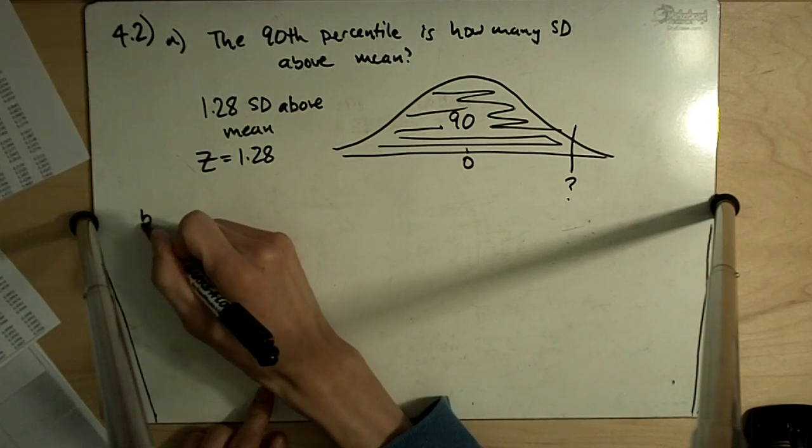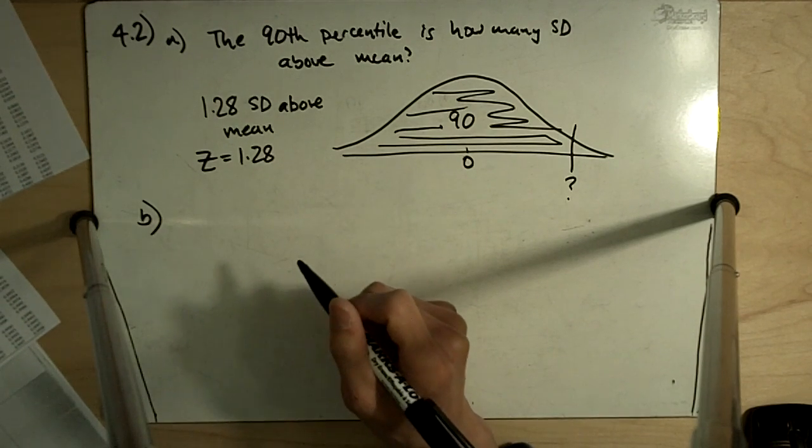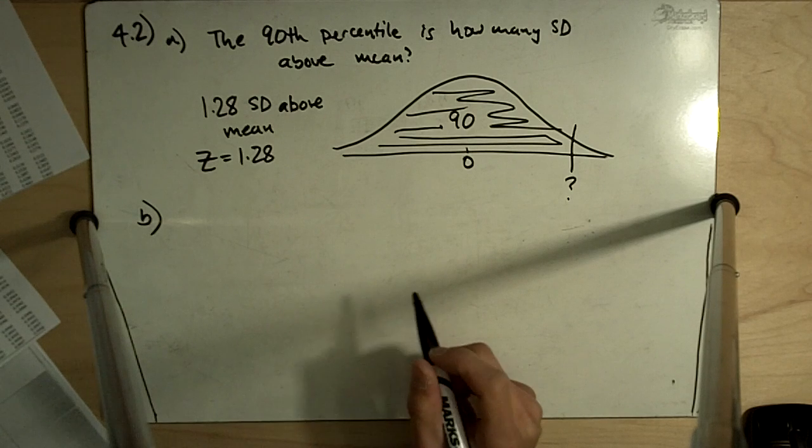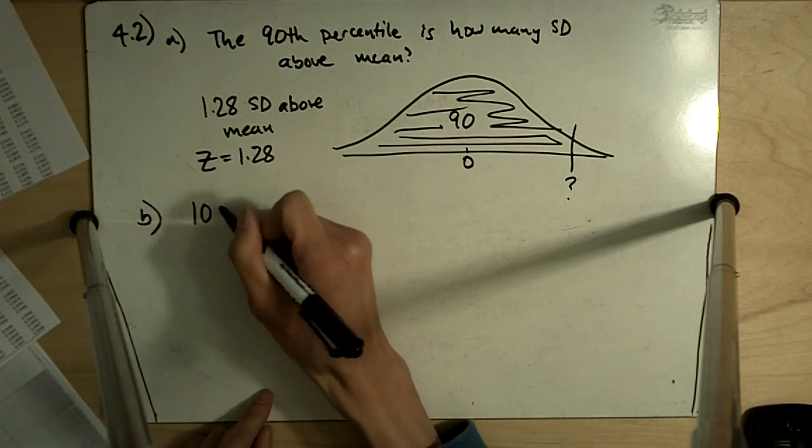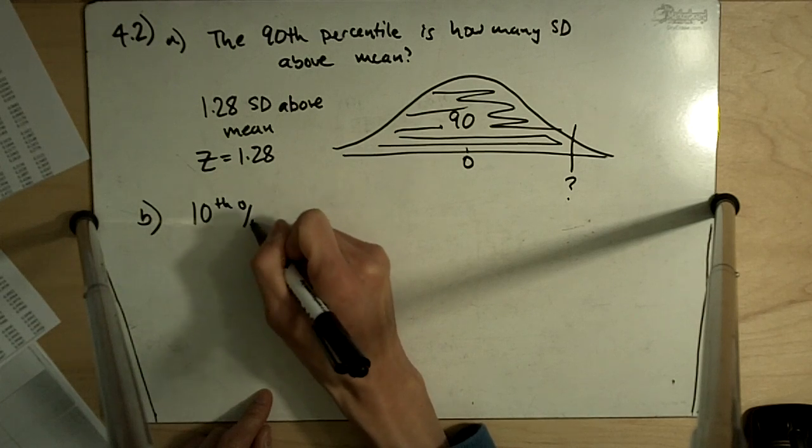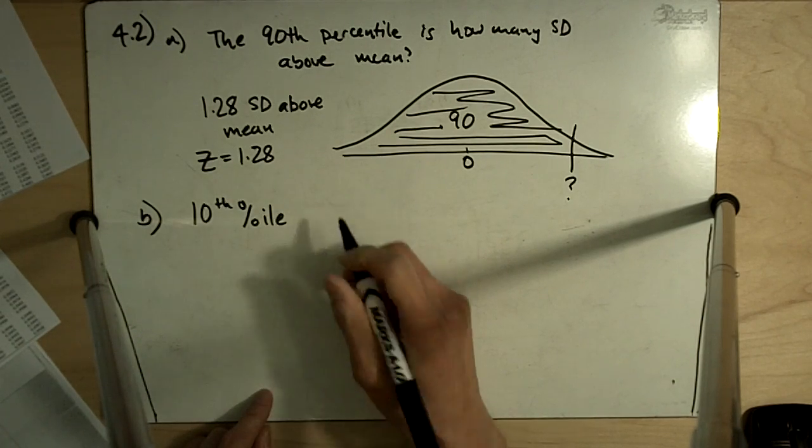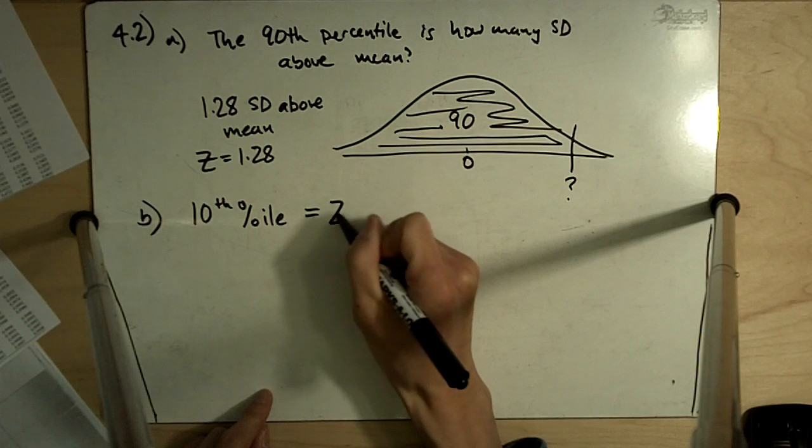Part B is very similar, except it asks: the 10th percentile of a normal distribution is how many standard deviations below the mean. I am going to just write 10th percentile has what Z-score.